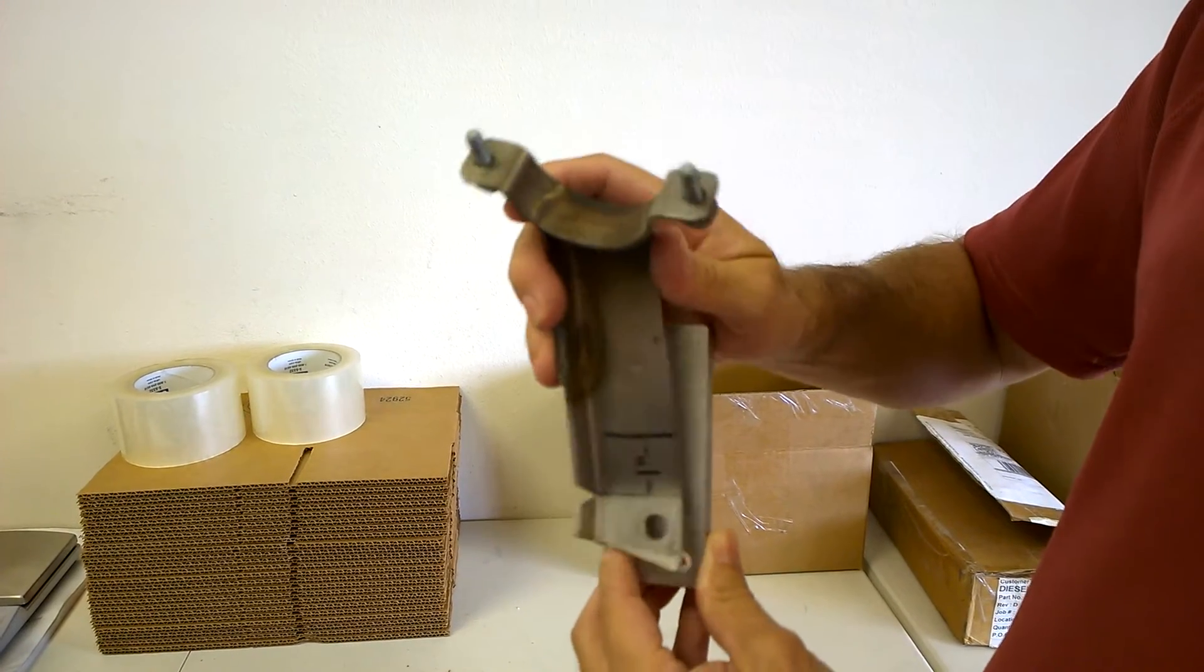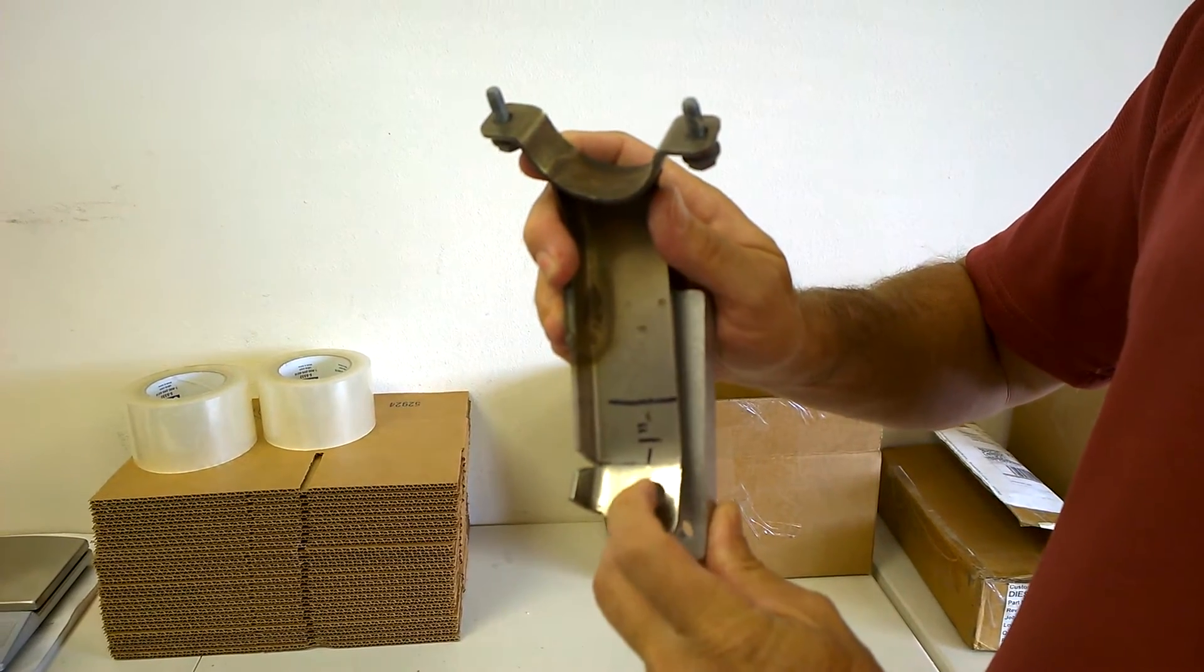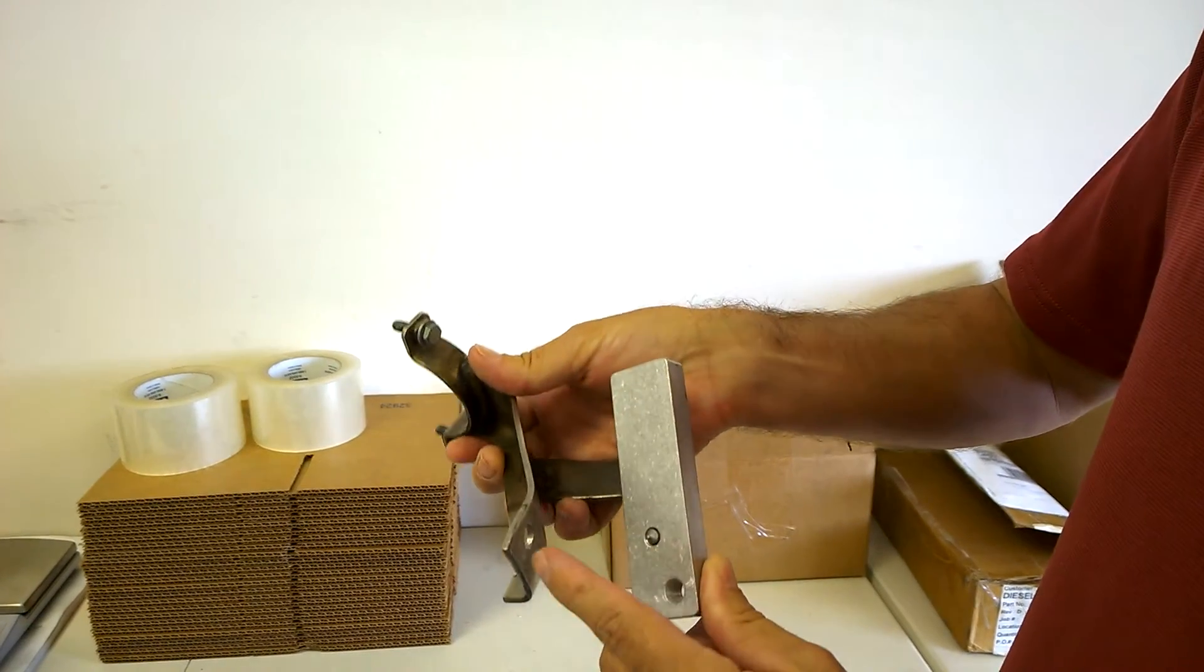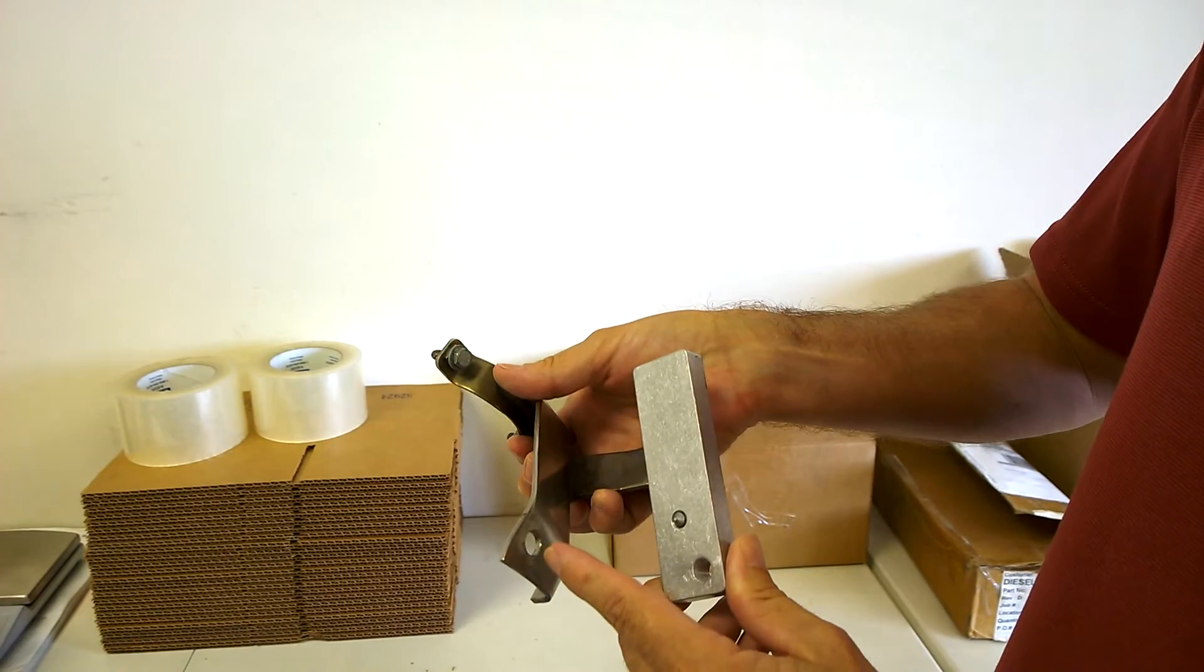And then you just whack the bracket with a hammer, just not too hard, but just whack it with a hammer, and that's going to put a mark from this pointy bolt in the backside of the intercooler pipe bracket.